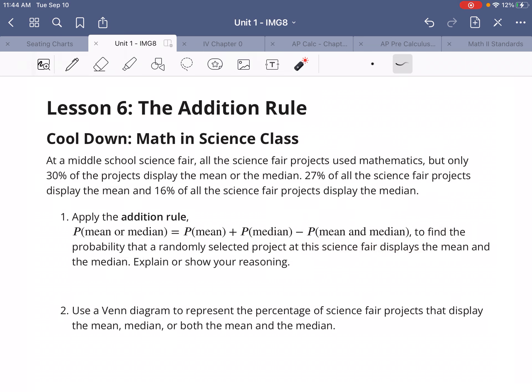So the probability of the mean is 27%, probability of the median is 16%, add those together, and then we would take away both.